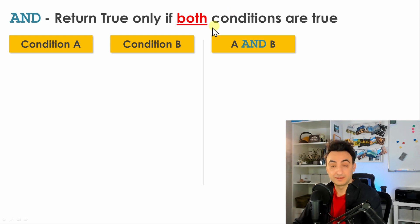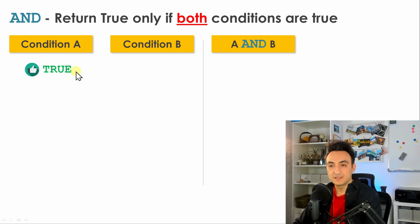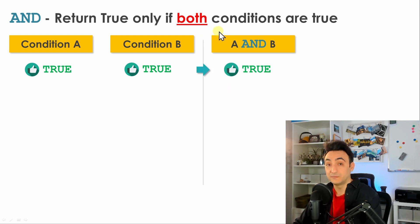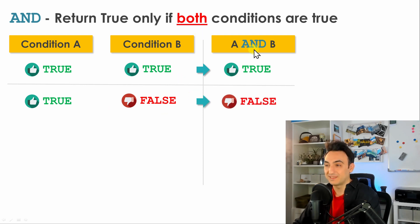The AND operator returns true only if both conditions are true, otherwise it returns false. So let's say we have condition A and condition B combined with AND. First scenario: condition A is true and condition B is true — we get true because both conditions are fulfilled. Second scenario: condition A is true but condition B is false — not both are true, so we get false.